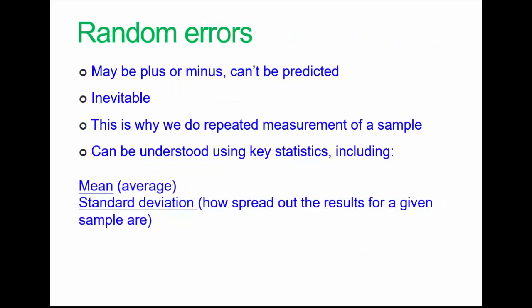Then there are random errors. We design equipment and methods to reduce these, but they can't be predicted and can't be removed completely. They can be plus or minus, so over time they'll sort of even out. We'll come back to that when we talk about what we call residuals. We mitigate this by doing repeated measurements of the sample and taking key statistics such as the mean and the standard deviation, which tell us the average of the sample and how spread out the results for a given sample are.